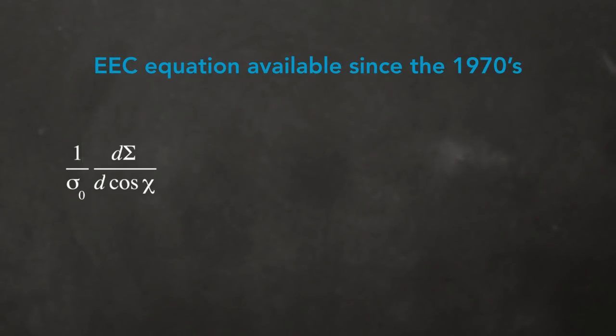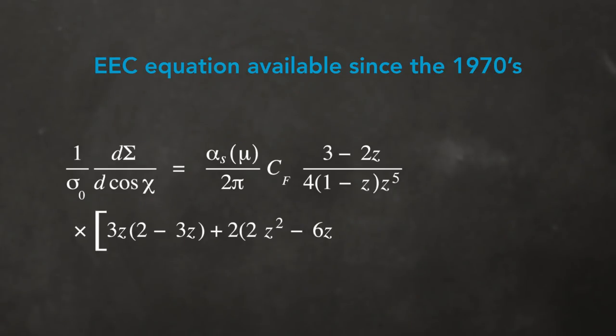So for particle colliders with electrons and their antimatter siblings positrons, we've known since the 1970s how to write a formula for the most important contribution to this energy-energy correlation.